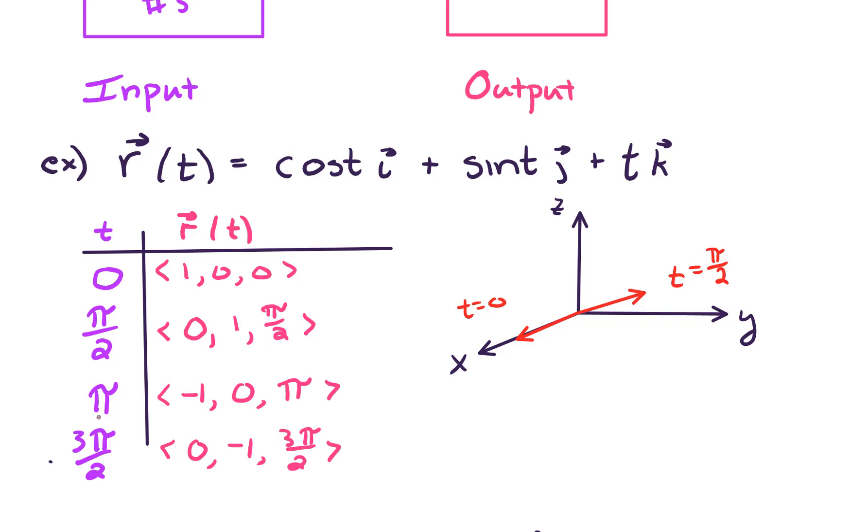When t equals pi, our vector is going to be negative 1 in the x direction. So that's shooting back through the page here. 0 in the y and pi in the z. So that vector is going to look something like this. And this is when t equals pi. And then, lastly, on our list here, we got 3 pi over 2. And that vector is going to be 0 in the x, negative 1 in the y, and up even higher here at 3 pi over 2.